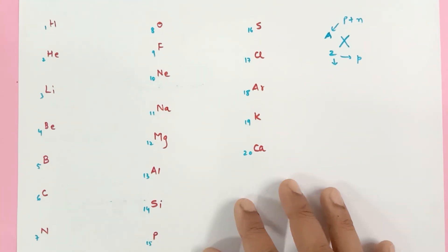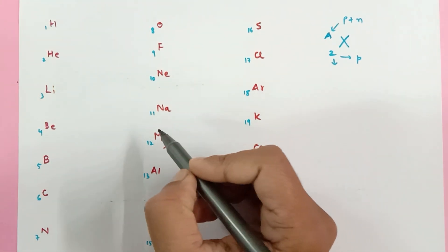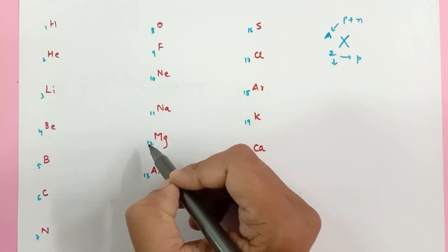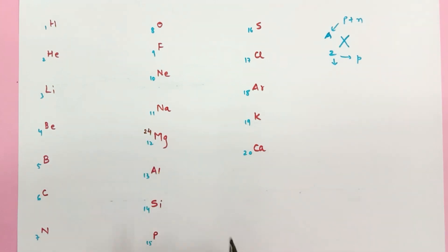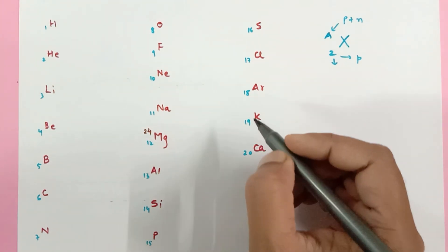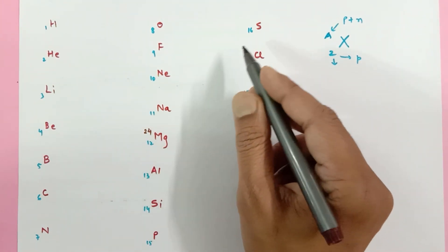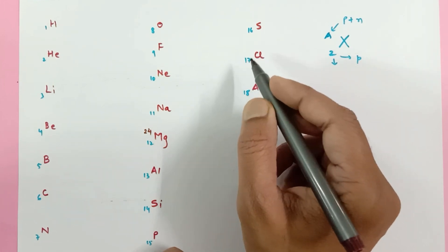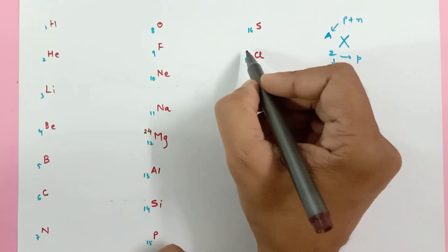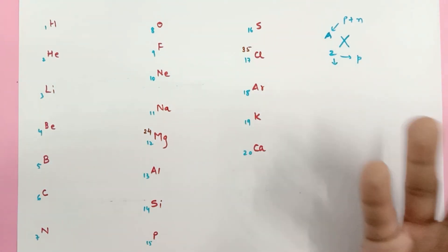Now comes the mass number. See, if you look at any even number, just double it up. Multiply it by 2, becomes the mass number. If you see any odd number like this one, multiply it by 2 and add 1. So double plus 1. So 17 twos are 34 plus 1, that is 35. That's it.